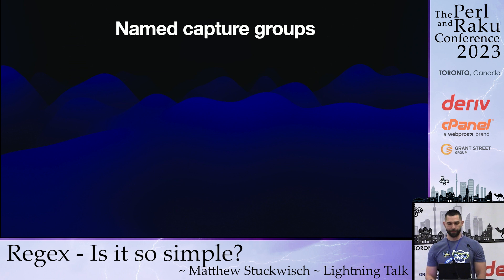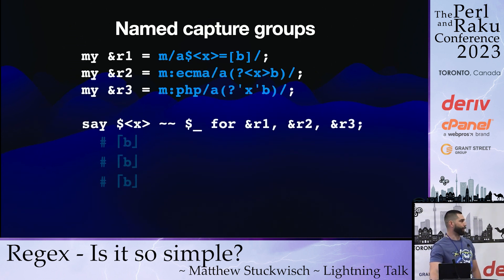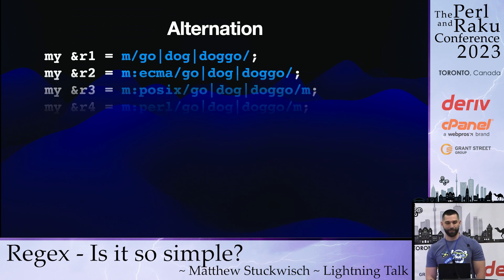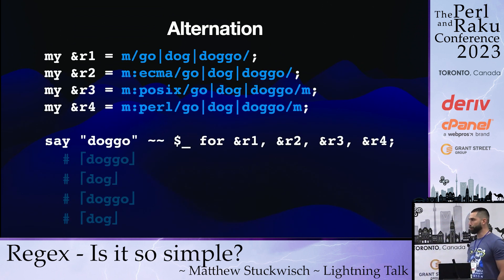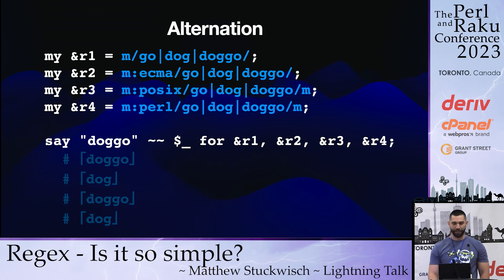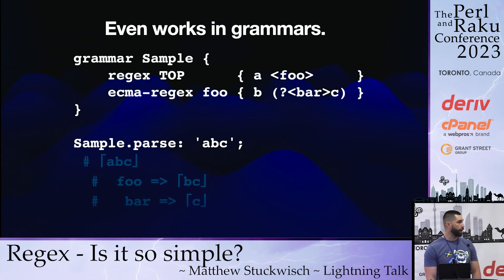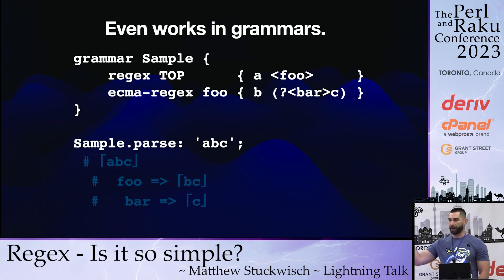What if we have named capture groups? There's a plethora of different formats for doing that. Same thing with ECMA, PHP — they just work as expected. Alternation: here we've got different responses depending on which one you're in. It could be dog over dog. And what's really nice about this, it even works in grammars. So let's say I have this quick little one — I have a regex at the top, then an ECMA regex for the second one, and all the named captures work just like we would expect them to.